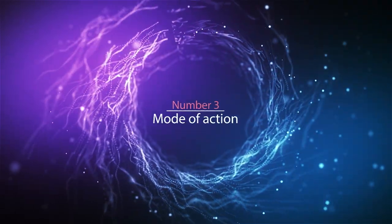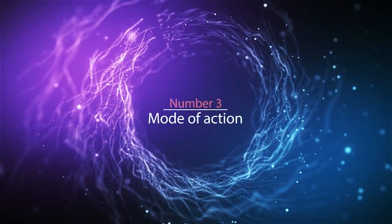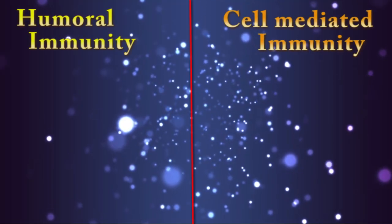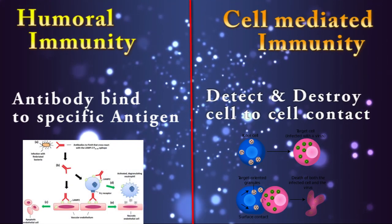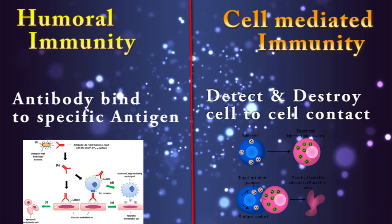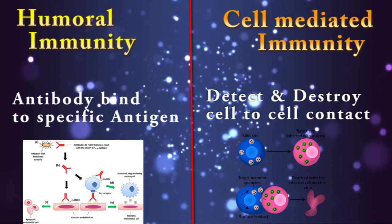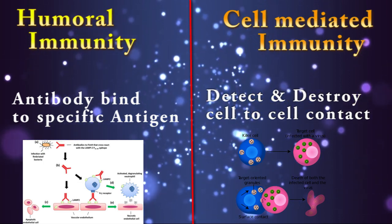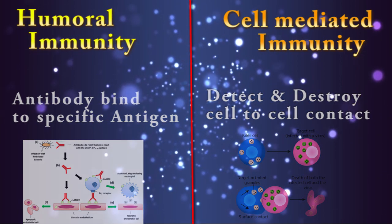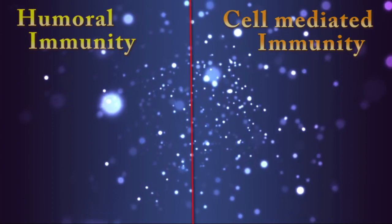Difference number 3: mode of action. In humoral immunity, antibodies bind to a specific antigen. In cell-mediated immunity, it detects and destroys cells by cell-to-cell contact.